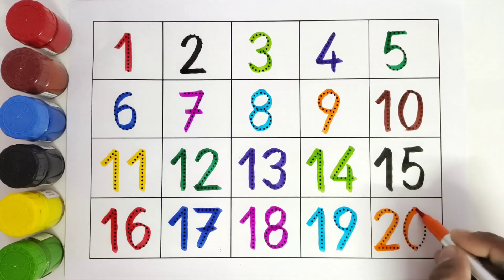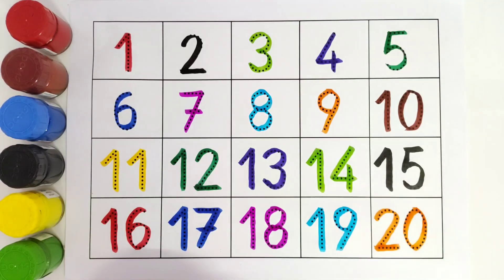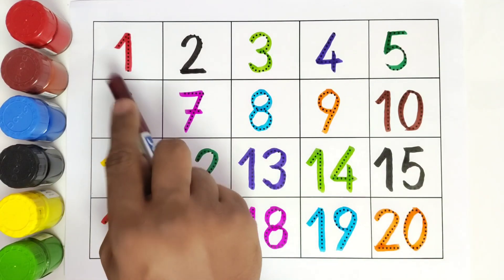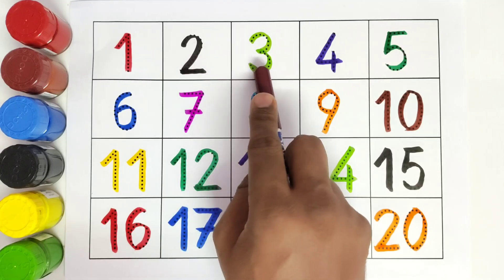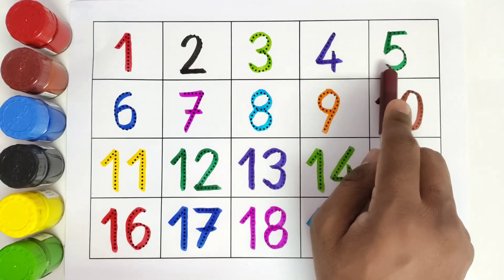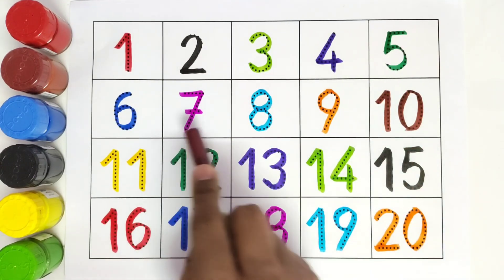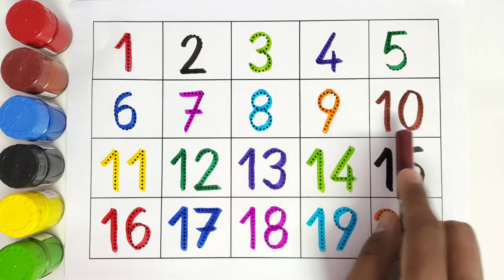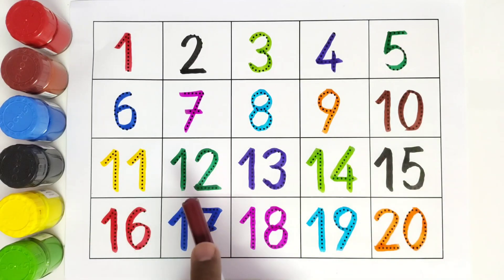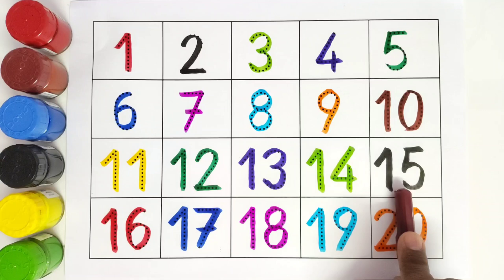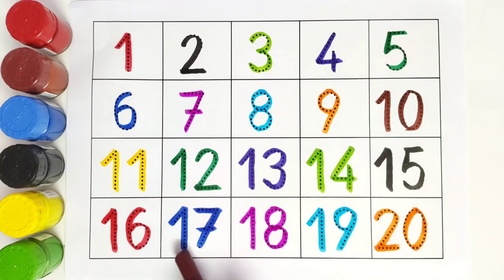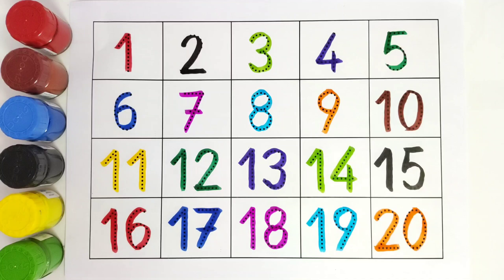So kids, we will be reading these numbers: one, two, three, four, five, six, seven, eight, nine, ten, eleven, twelve, thirteen, fourteen, fifteen, sixteen, seventeen, eighteen, nineteen, twenty. Thank you kids for coloring this with me.